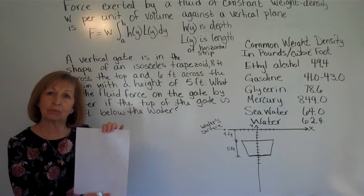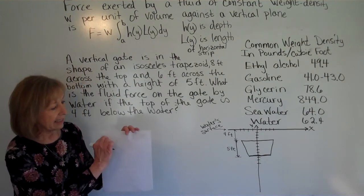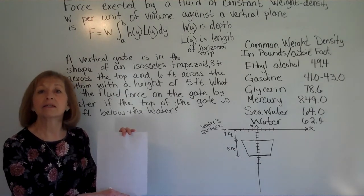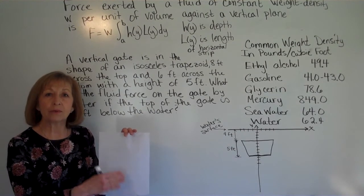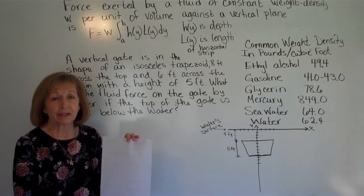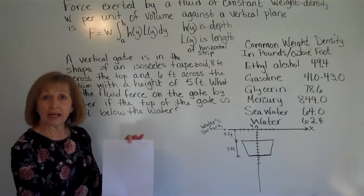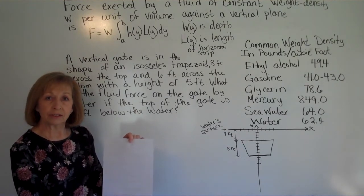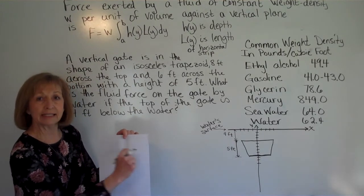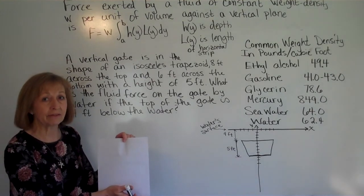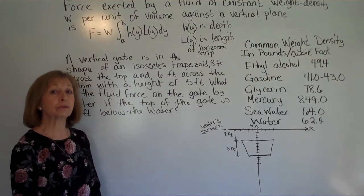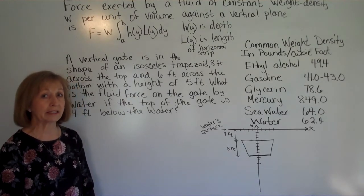But if you take and you submerge the plate vertically, then each part of that plate is at a different depth in the liquid, and so it has a different weight or pressure that is applied to it. We can use our calculus and our application of integrals to add up the pressure that is happening on the plate at the varying levels of the depth in order to find the total sum of the fluid pressure on that vertically submerged plate.